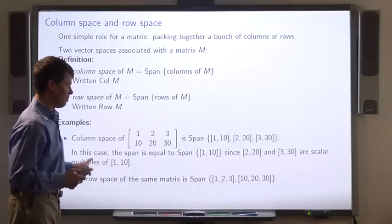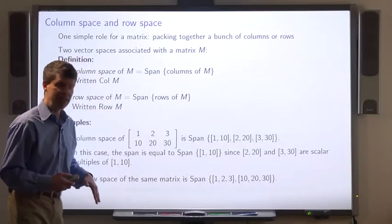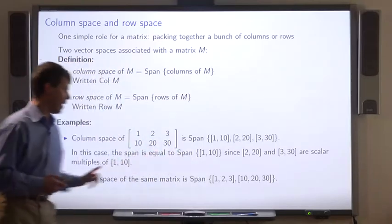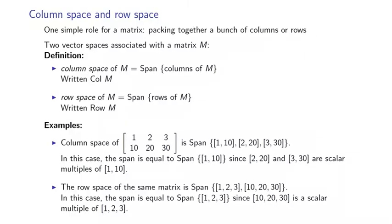So similarly, the row space of this matrix is the span of the two vectors 1, 2, 3 and 10, 20, 30. And again, this is also equal to the span of just the first vector, 1, 2, 3, since the second one is a scalar multiple of that.